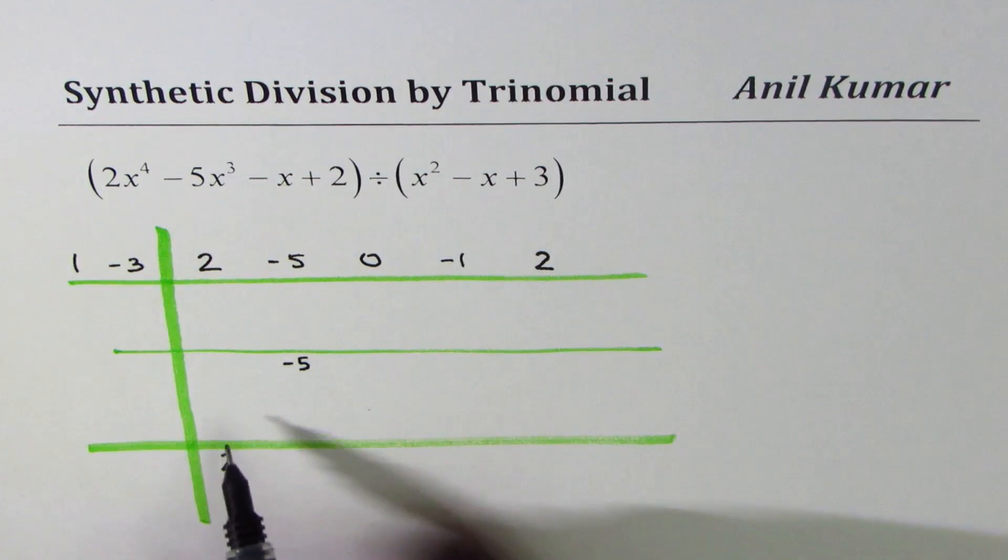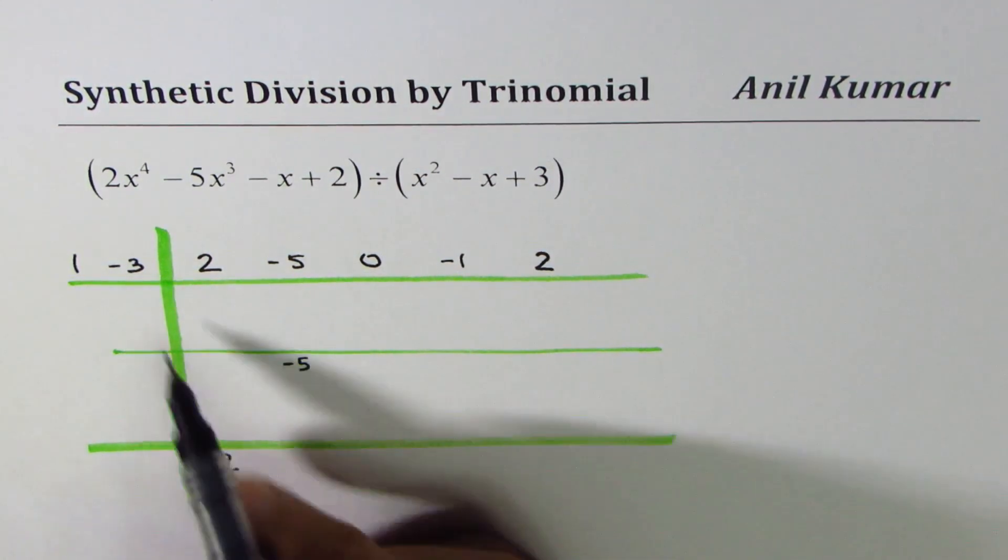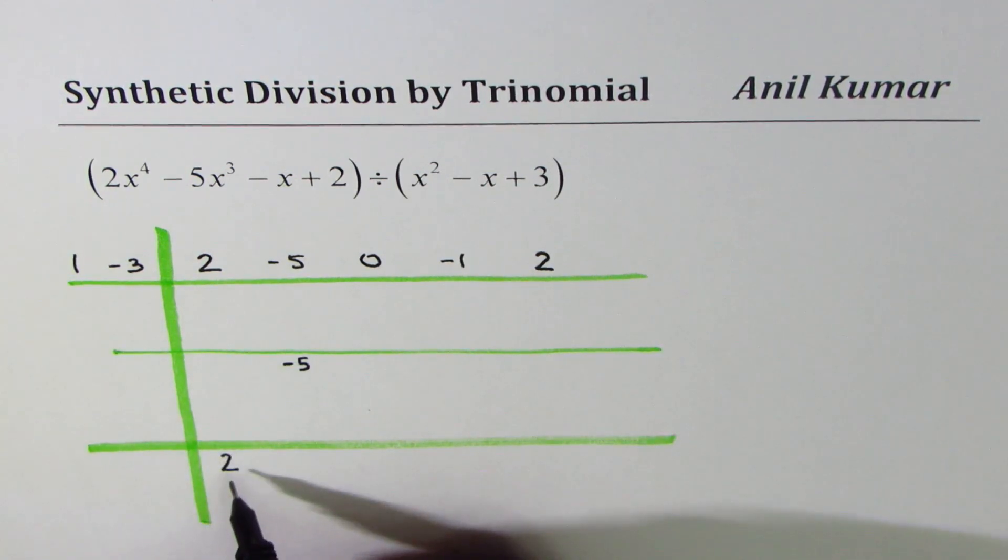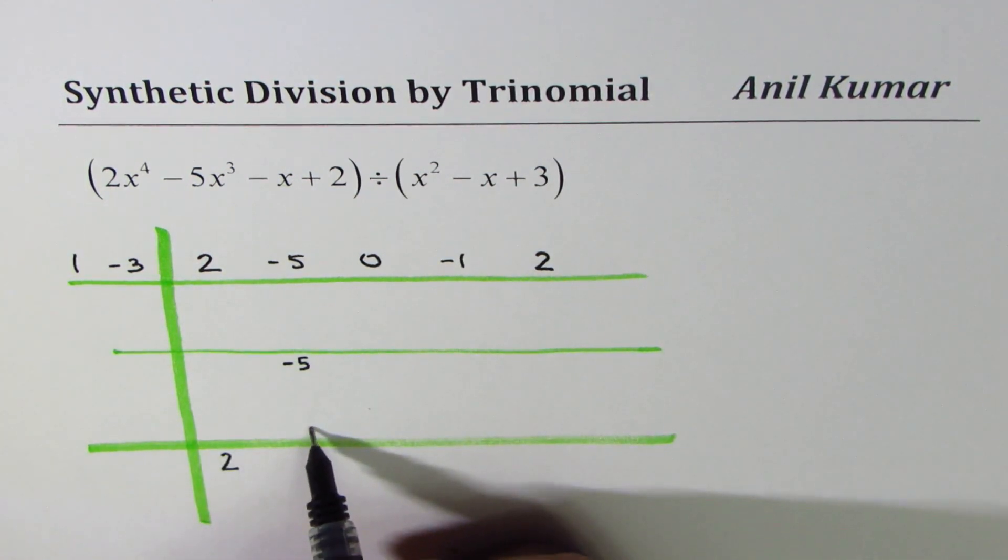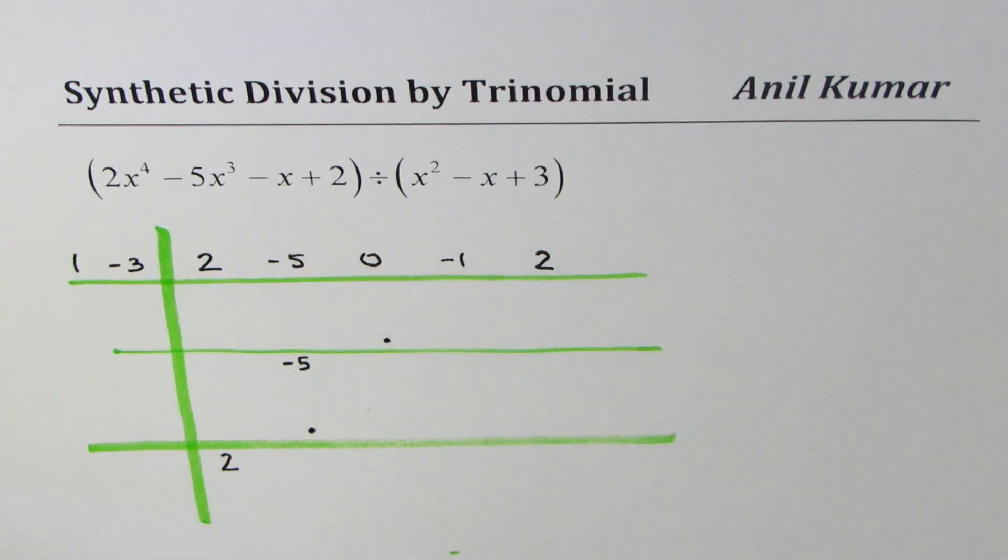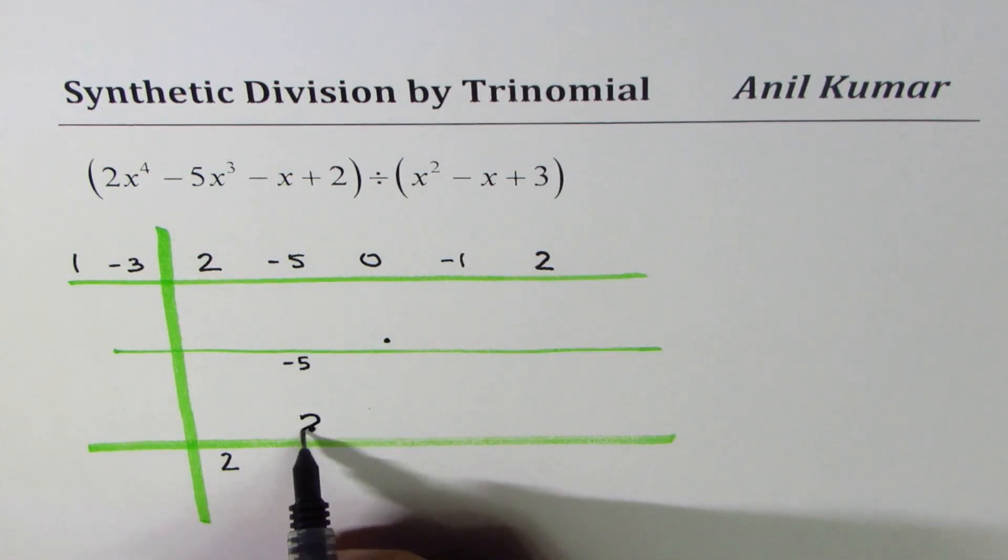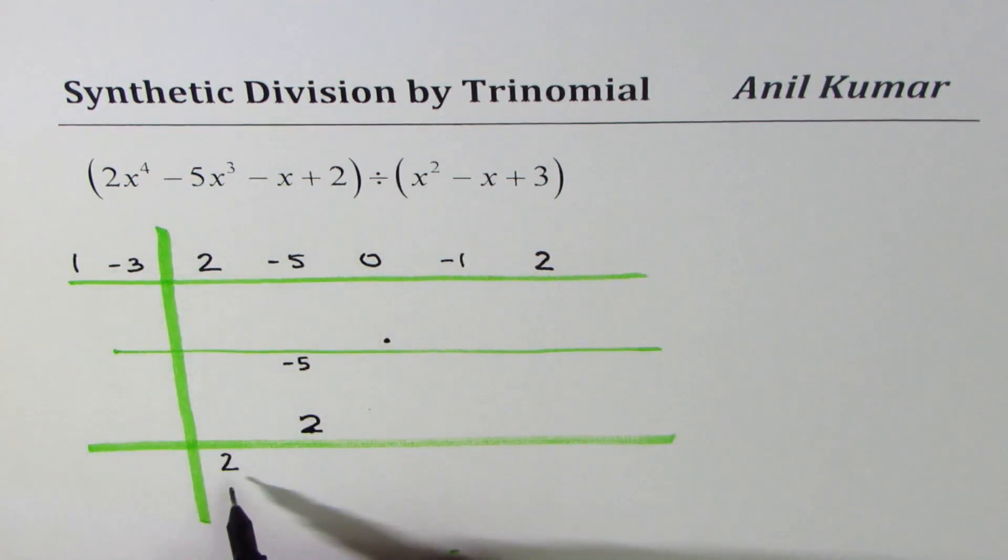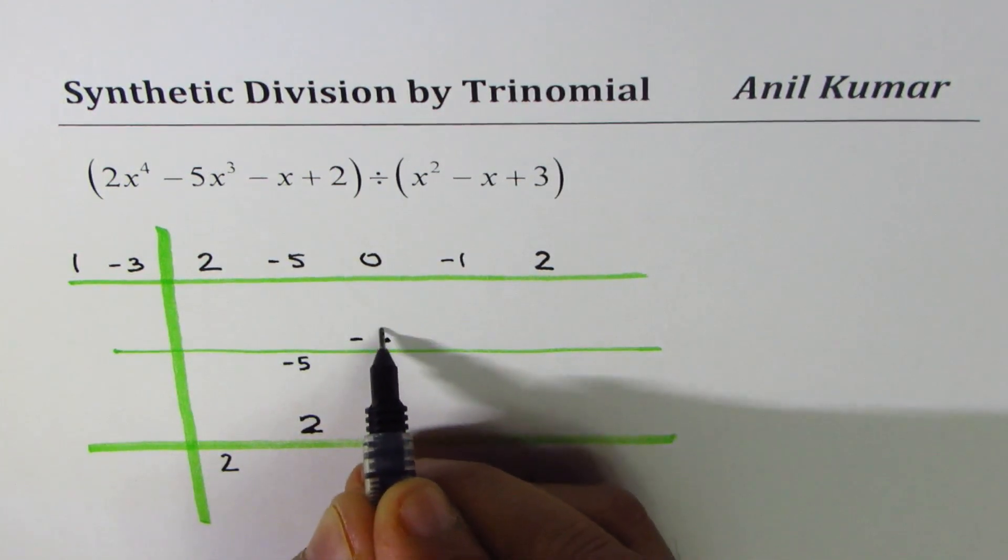Now we are going to multiply 1 and minus 3 by 2. After multiplication, we'll place the product above the lines. First one over here, the second there. 1 times 2 is 2, so we'll write 2 here. Minus 3 times 2 is minus 6, so we'll write minus 6 here.